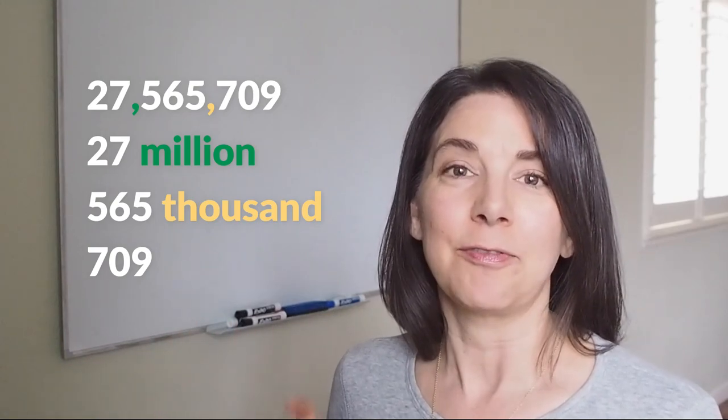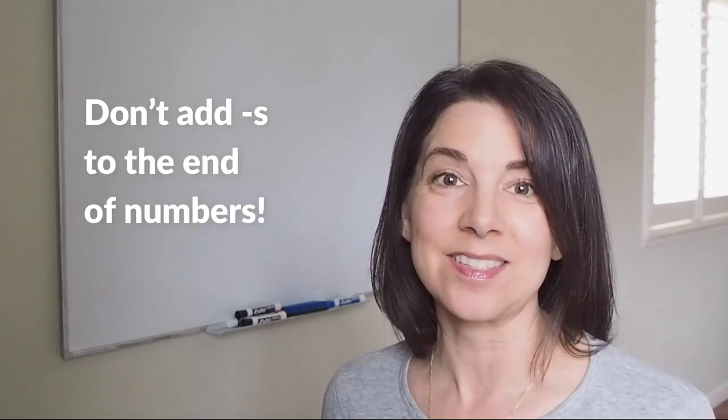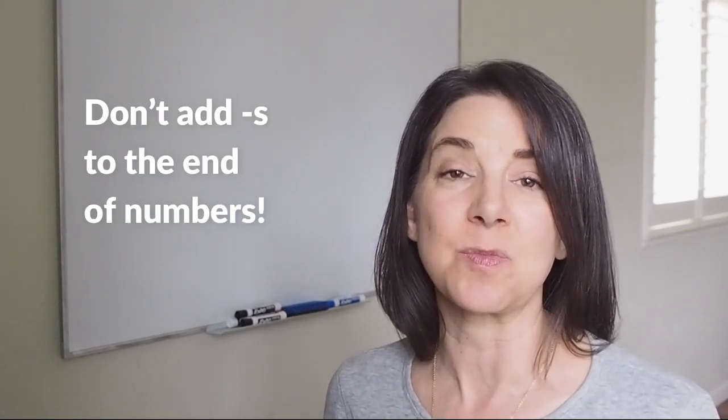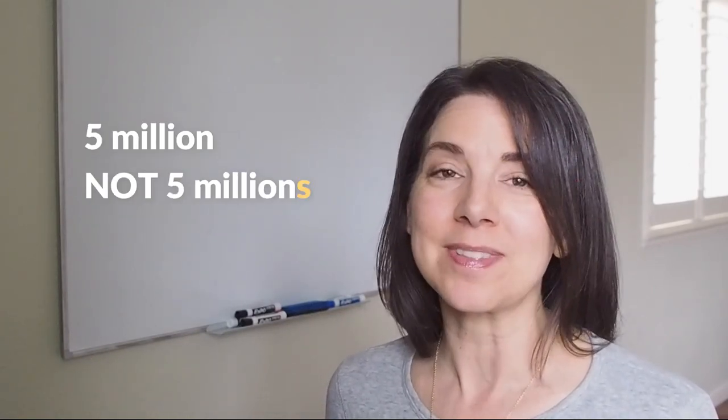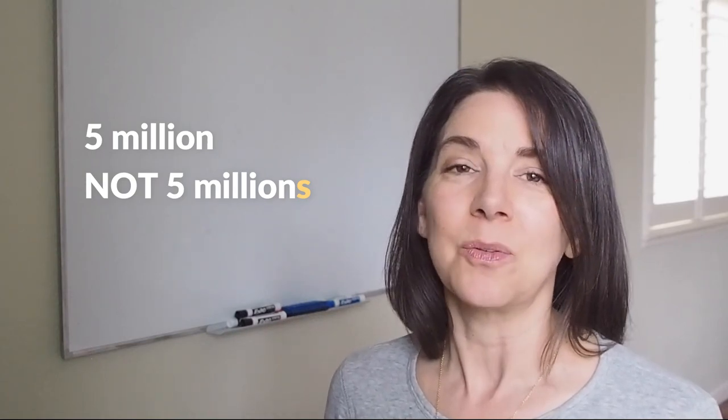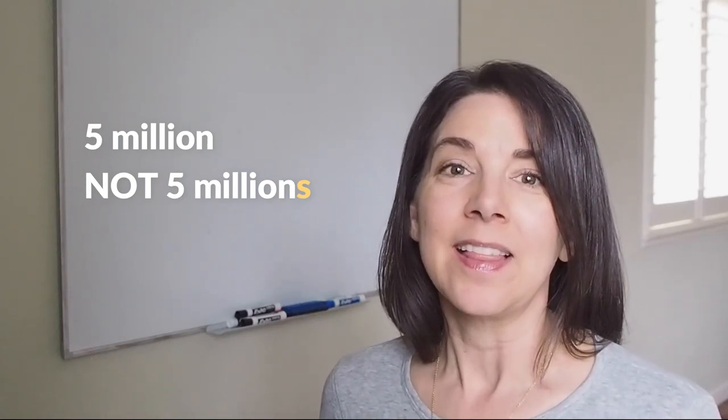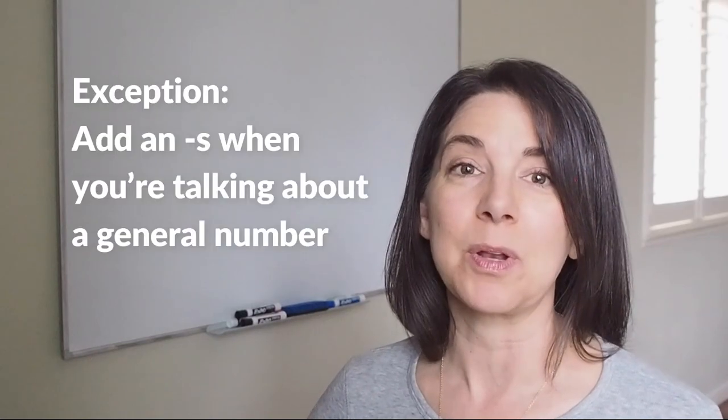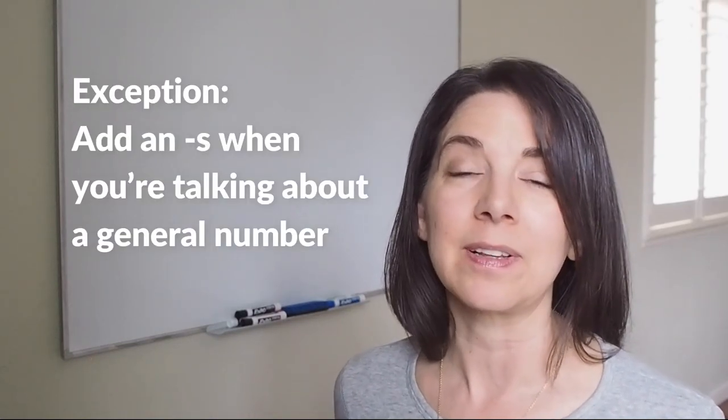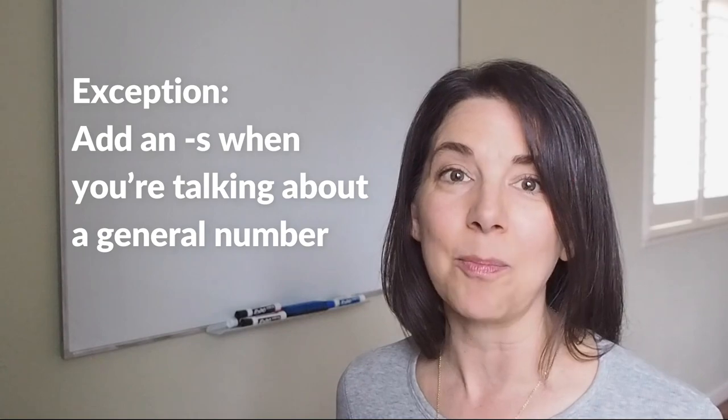One important point with numbers is that we don't add an 's' to numbers. I know it seems strange, but we don't add an 's'. So for the number five million, we don't say five millions, we say five million. The same thing with thousands and hundreds. Three hundred - we don't say three hundreds.